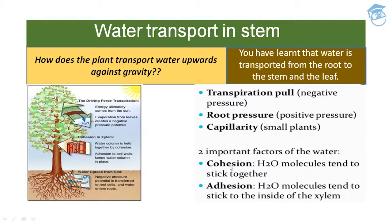Two important factors in water movement are cohesion and adhesion. Cohesion is the mutual attraction between water molecules — water molecules tend to stick together. Adhesion is when water molecules tend to stick to the inside of the xylem — the attraction of water molecules to a polar surface such as the surface of tracheary elements.